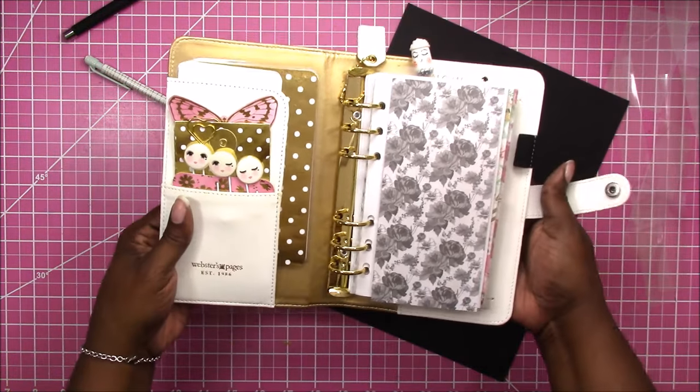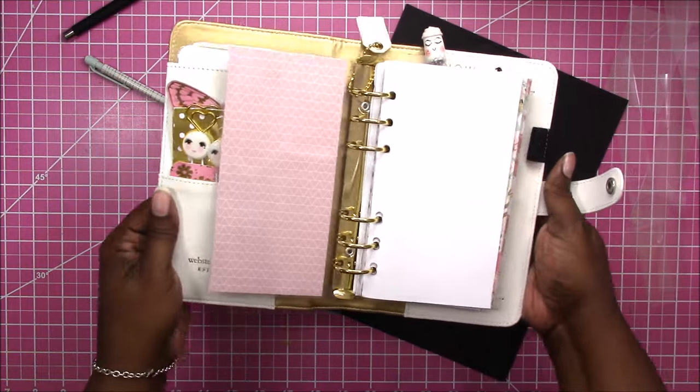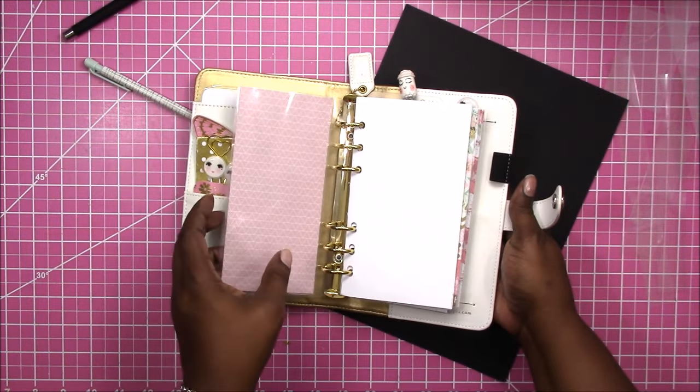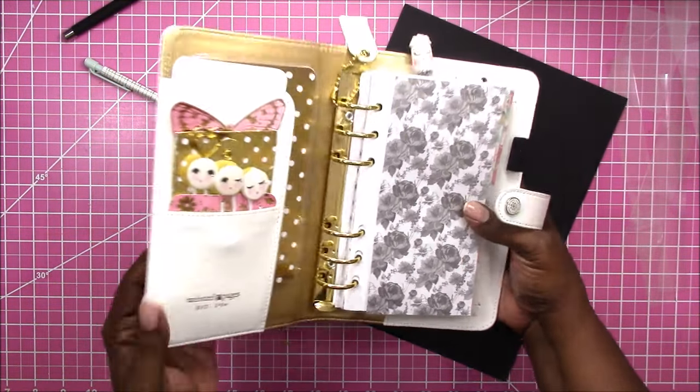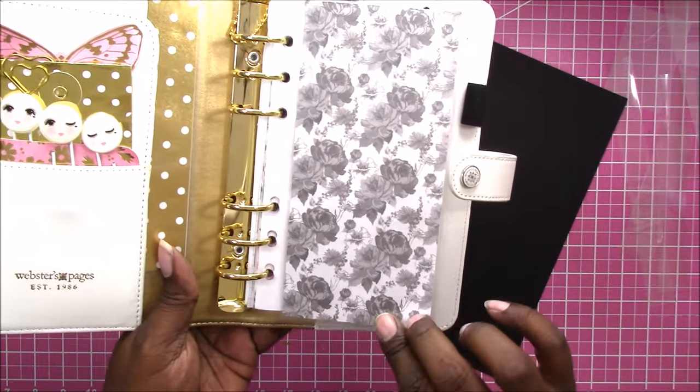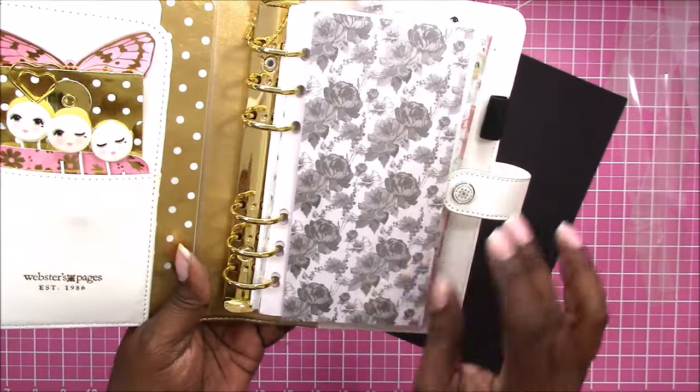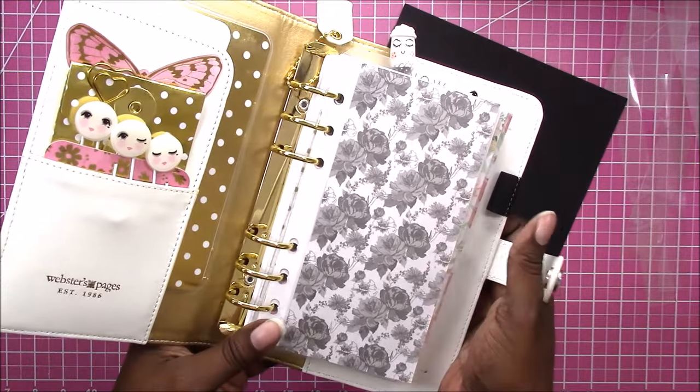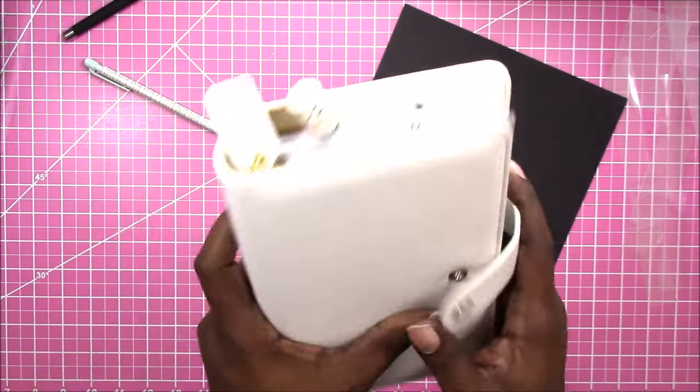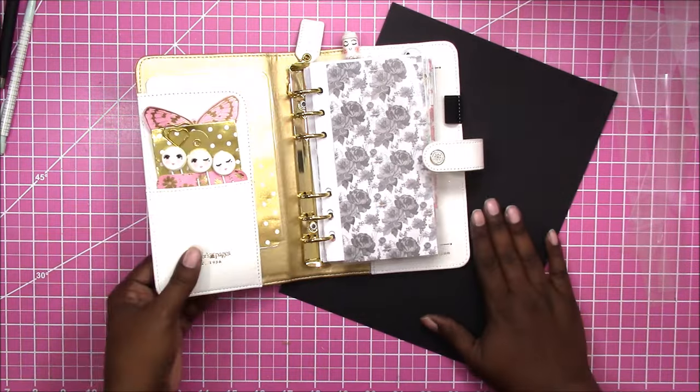And this is what it looks like, the front and the back. And let's go ahead and put it in. See how it looks. So there you have it. And that is how you do a personal size dashboard that is reusable for your personal size binder. Okay, so that's the personal size.